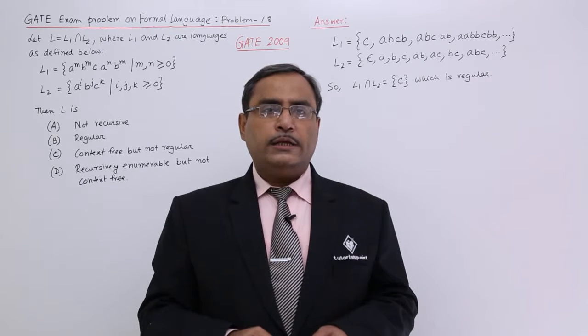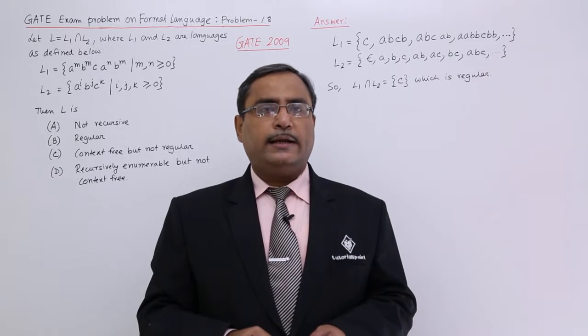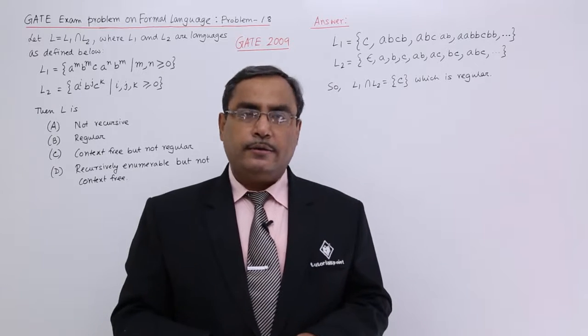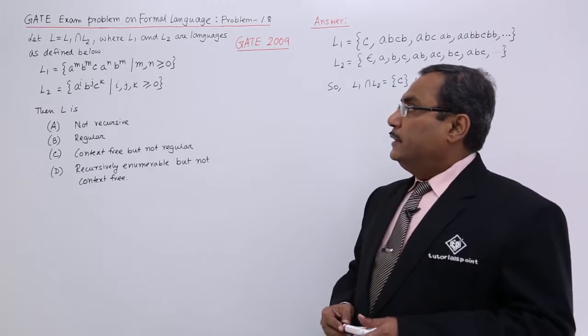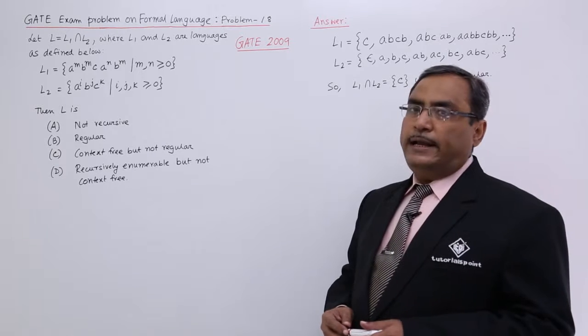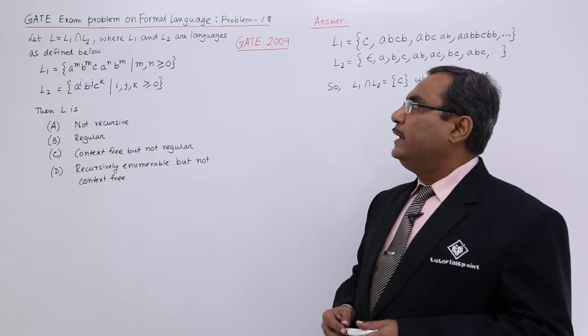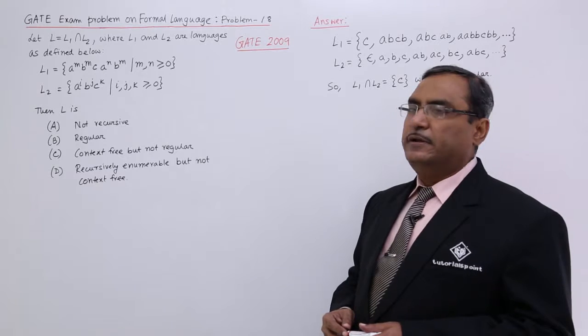Another problem on formal language. This question came in the GATE exam 2009. See, here lies the problem. Let L equals L1 intersection L2, where L1 and L2 are languages as defined below.